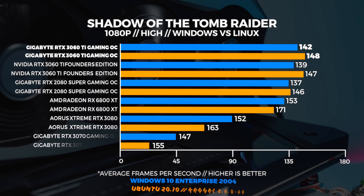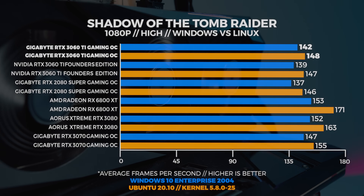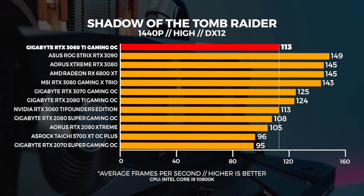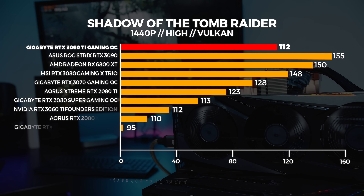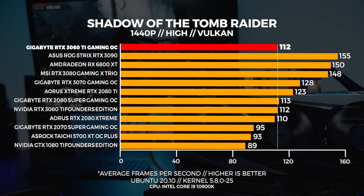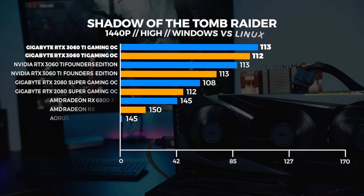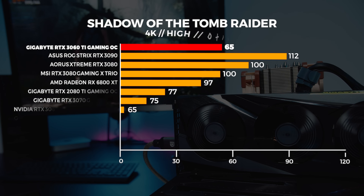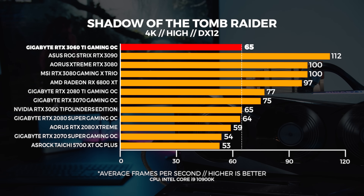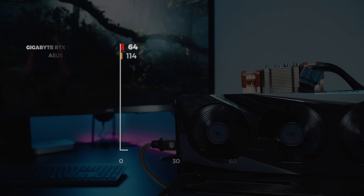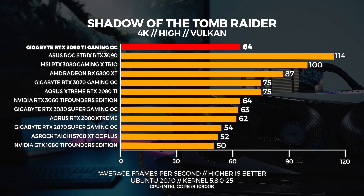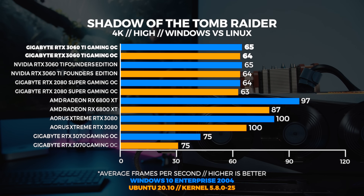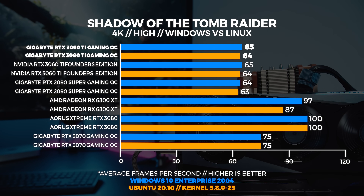We put the 3060 Ti's right next to the 2080 Super for quick reference because that's where this card is being positioned. At 1440p, we're seeing a pretty small uplift compared to the 2080 Super, and the Gaming OC and Founders Card are about the same. The Linux benchmarks show the exact same results with both cards. At 4K, we're seeing Windows be slightly faster than the 2080 Super, but the 3060 Ti is only marginally faster. Both the Gaming OC and Founders Edition perform about the same.